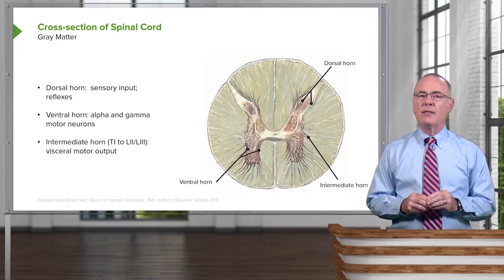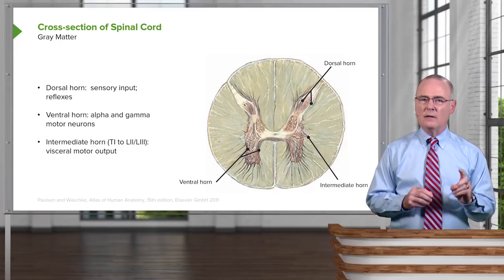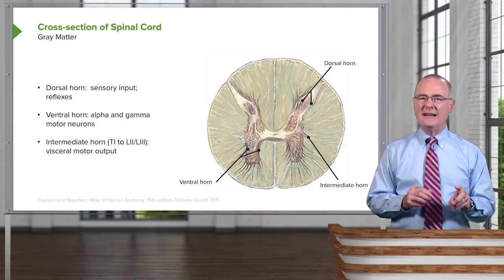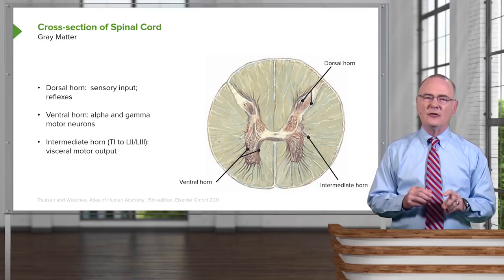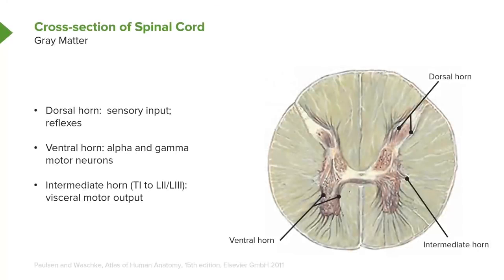In thoracic segments T1 through T12 and L1, L2, and perhaps L3, there is an intermediate or gray horn, as seen in this thoracic spinal cord axial section. The intermediate horns contain motor neurons that are part of visceral motor output. Sympathetics are being relayed out of the cord from motor neurons that are sympathetic, or efferent, in nature residing here.